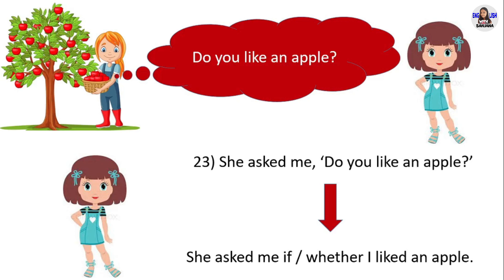Next example: 'Do you like an apple?' She asked me 'Do you like an apple?' in direct speech. In reported speech, she asked me whether I liked an apple. This is a yes/no question — remember to always use 'if' or 'whether' before the reported question. 'Do like' in present simple changes into 'liked' in past simple. Pronoun 'you' changes into pronoun 'I.'